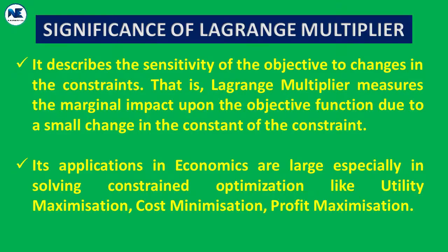Another point is that the Lagrange multiplier also deals with cases where the constraint is an implicit rather than explicit function. The fifth point is that the Lagrange multiplier describes the sensitivity of the objective to changes in the constraints. Lambda — that is, the Lagrange multiplier — measures the marginal impact upon the objective function due to a small change in the constant of the constraint.